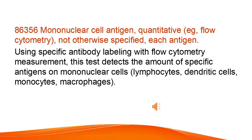Mononuclear cell antigen, quantitative, e.g., flow cytometry, not otherwise specified, each antigen. Using specific antibody labeling with flow cytometry measurement, this test detects the amount of specific antigens on mononuclear cells, lymphocytes, dendritic cells, monocytes, macrophages.